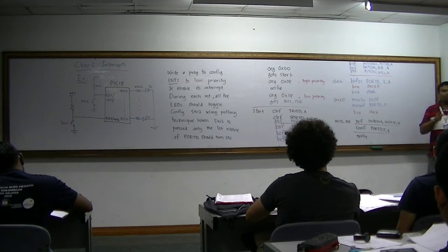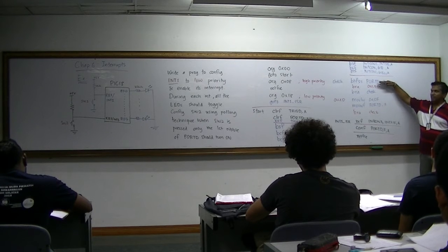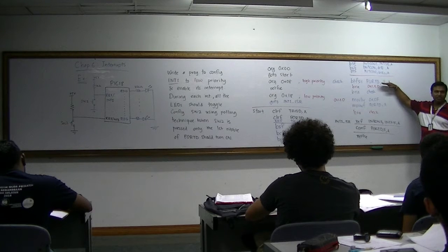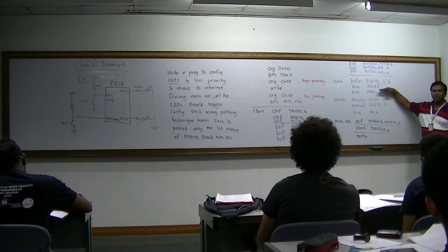So that is the difference between interrupt and polling. You see here, when I go slow motion, if the PC has passed this line and if you press the switch, nothing will happen.